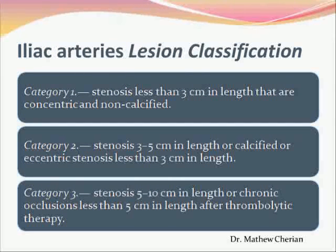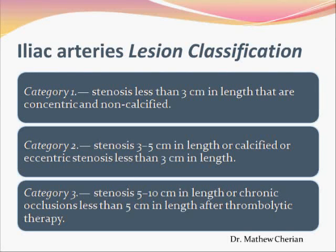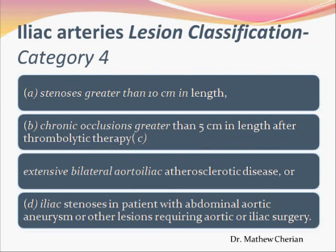Category 1 lesions are lesions less than 3 cm. Category 2 lesions are lesions which can be less than 3 cm when calcified or eccentric, or a 3 to 5 cm lesion. Category 3 lesions are longer lesions — stenosis of 5 to 10 cm or an occlusion of 5 cm. Category 4 lesions are not ideally suitable for endovascular therapy: stenosis greater than 10 cm, chronic occlusion greater than 5 cm, extensive bilateral aorto-iliac disease, or stenosis in a patient with an abdominal aneurysm or another cause requiring surgery.